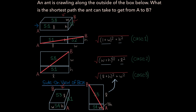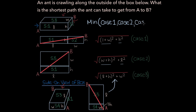We now have three possible shortest path lengths for the ant traveling from A to B. To determine which is actually the shortest, plug in the actual dimensions — the length, width, and height of the box. The shortest path will be the minimum of the values obtained from the formulas in case 1, case 2, and case 3.